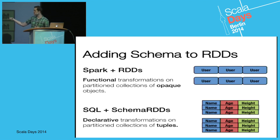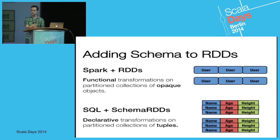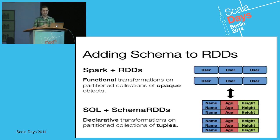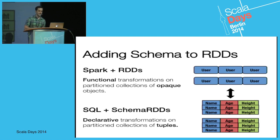What SQL plus schema RDDs gives us is declarative transformations on partitioned collections of tuples. We can actually break up the user object into its components and understand the data types of each field. Instead of telling us exactly how to perform the computation, you tell us what computation you want to do, and the optimizer figures out the most efficient way. And this is not an either-or situation — when you're doing something like a join or an aggregation, express it in SQL; when something is difficult to express in SQL, immediately drop back to Scala.